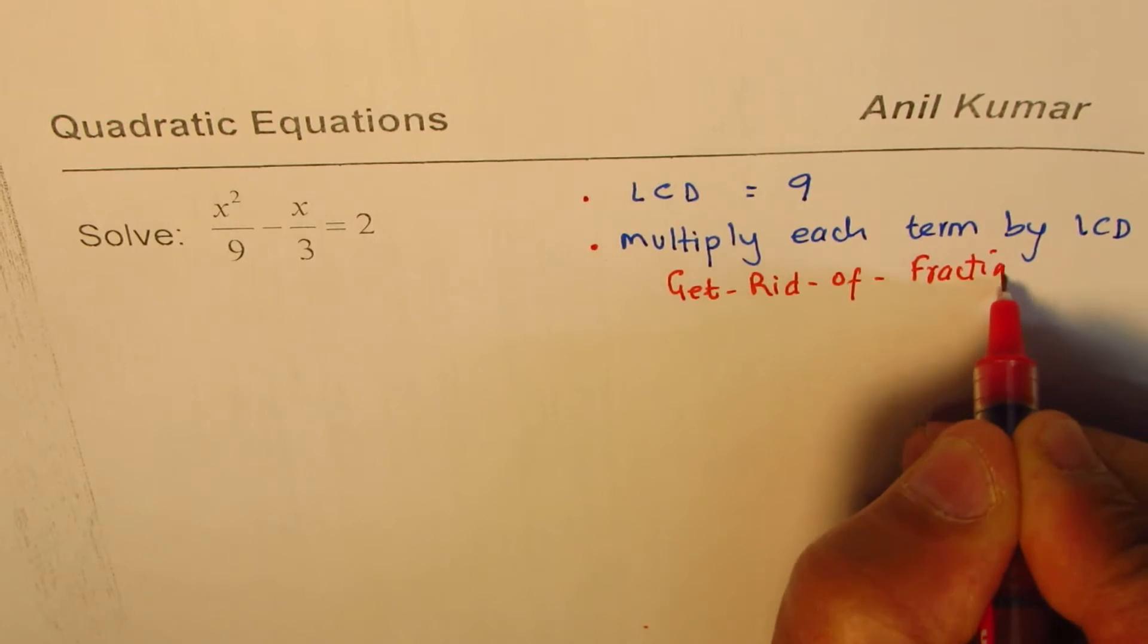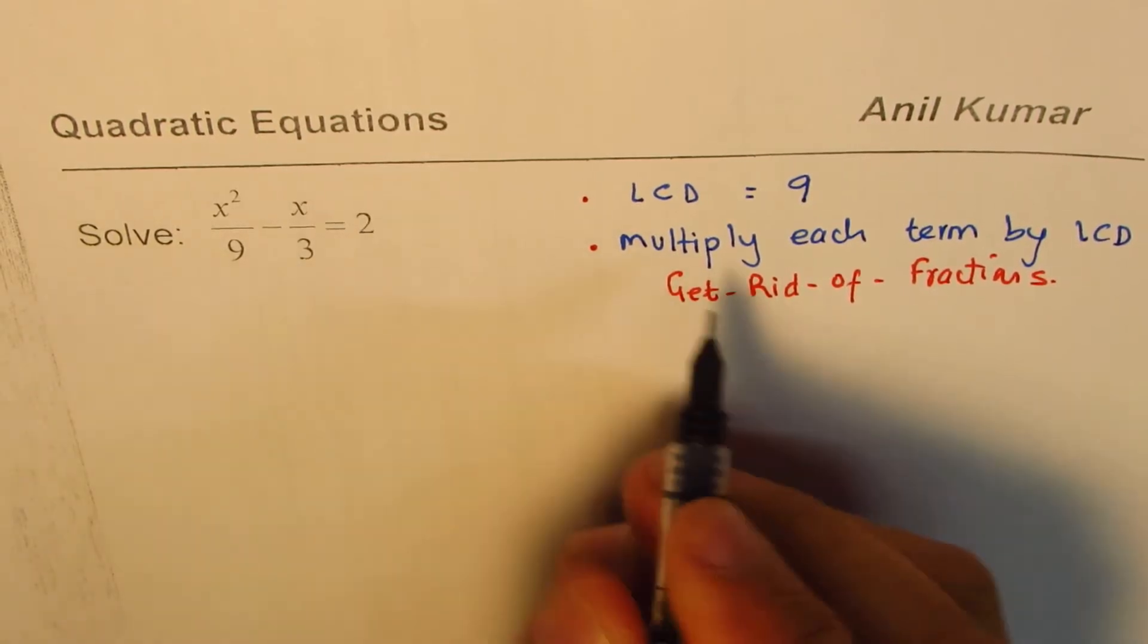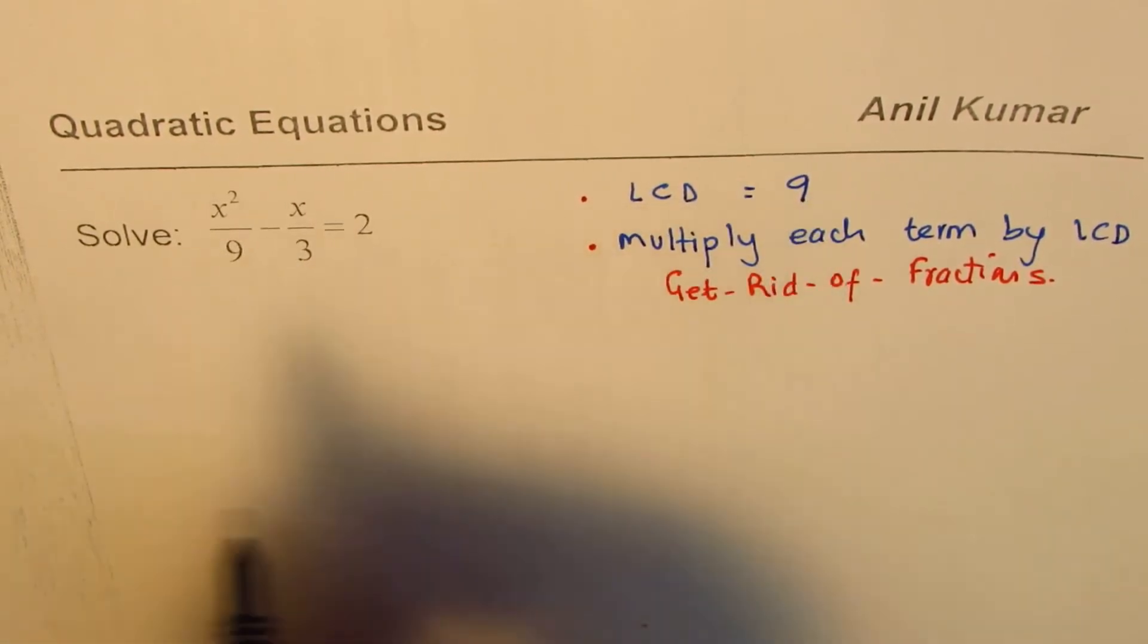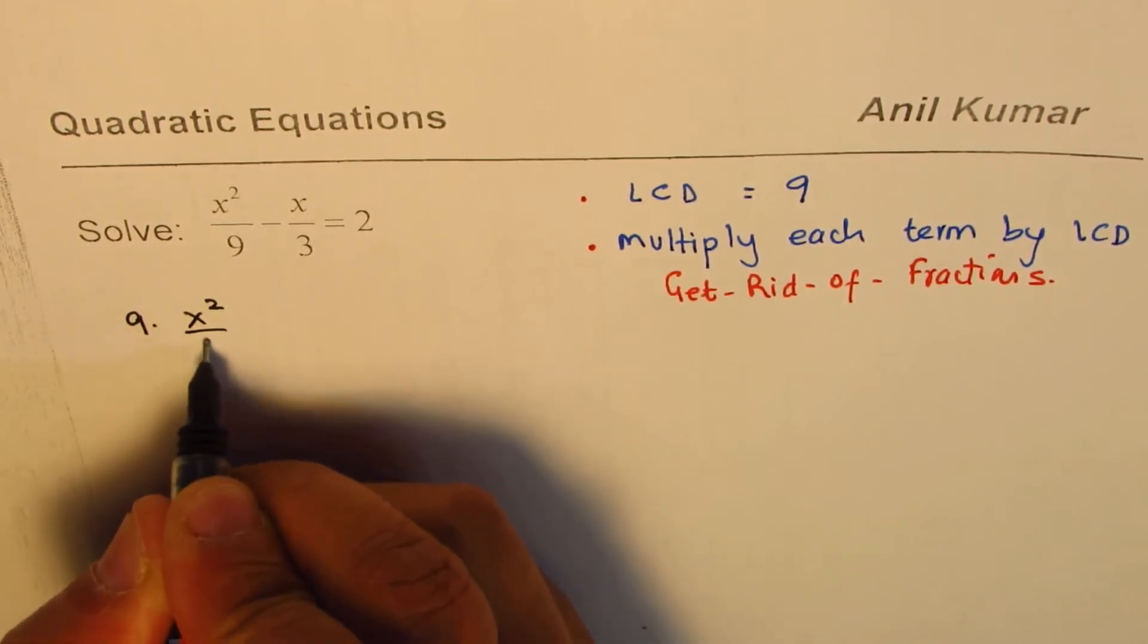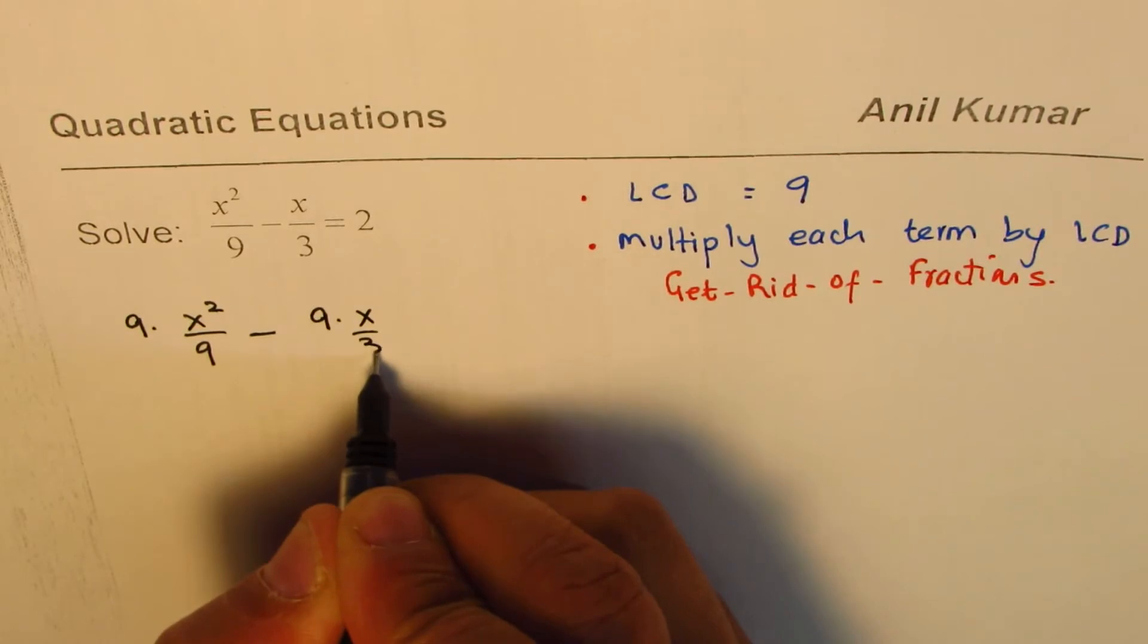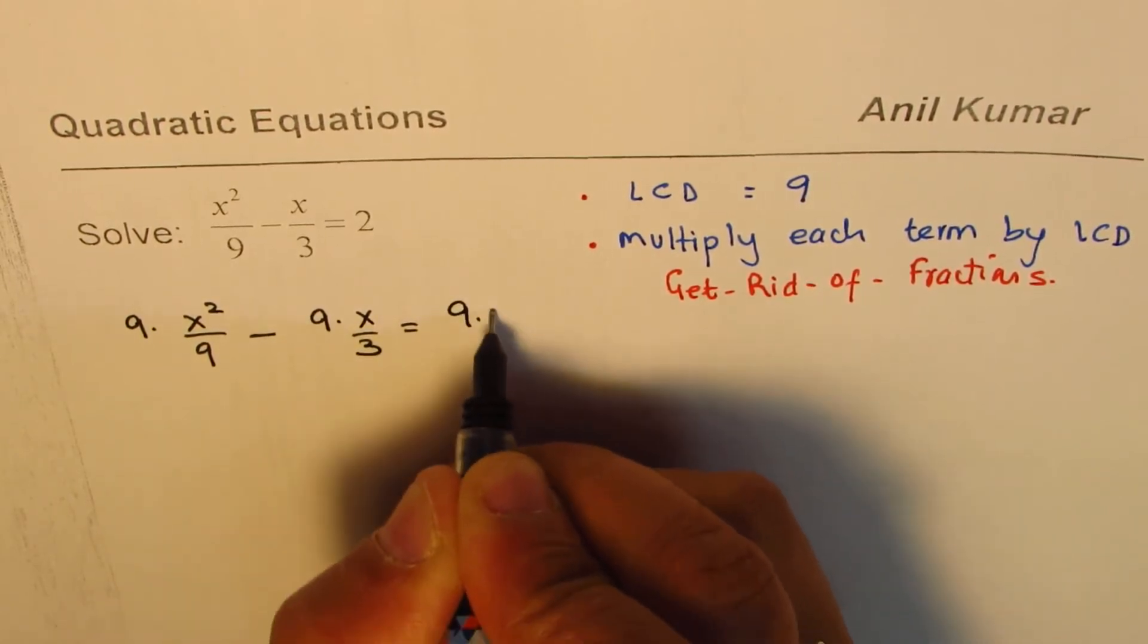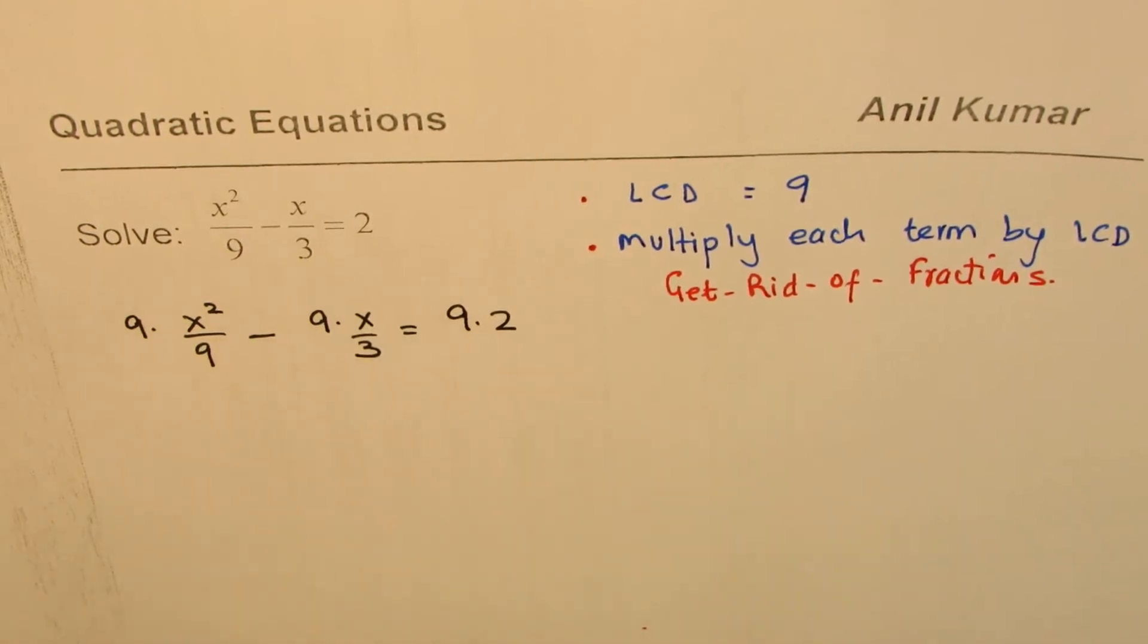Then you get a quadratic equation without fractions. So let's do this step. We know lowest common denominator is 9. So we'll do 9 times x²/9 minus 9 times x/3 equals to 9 times 2. So we have multiplied each term in this equation by 9.